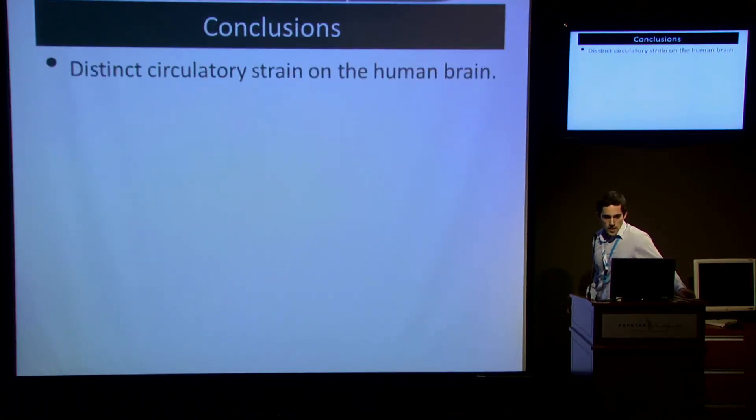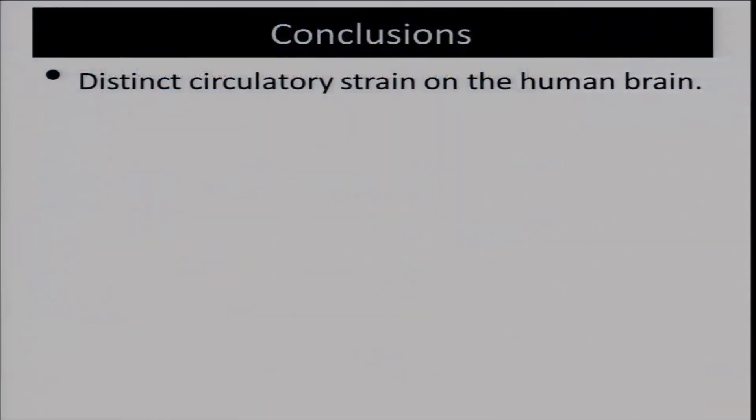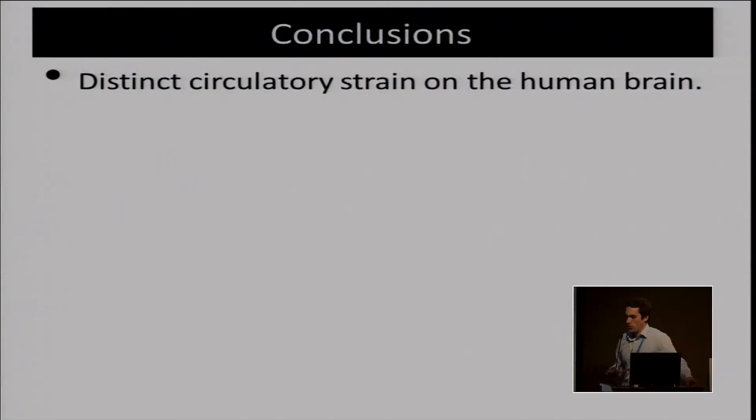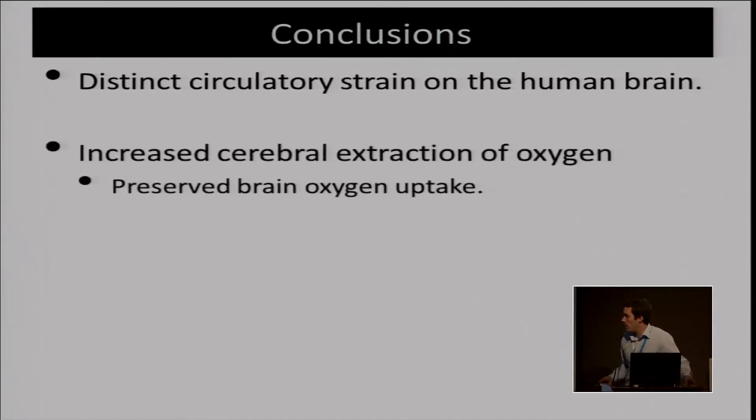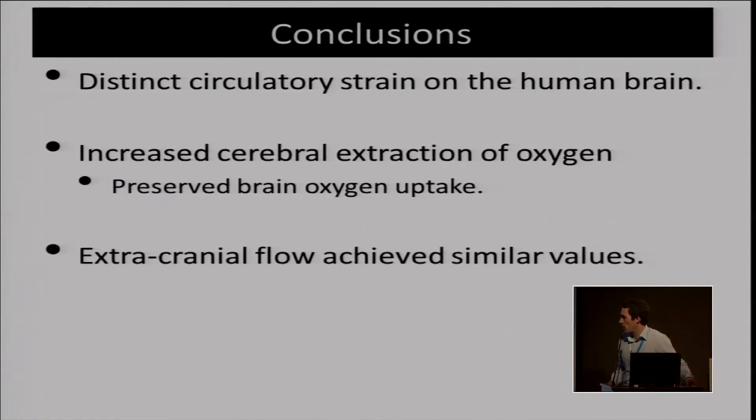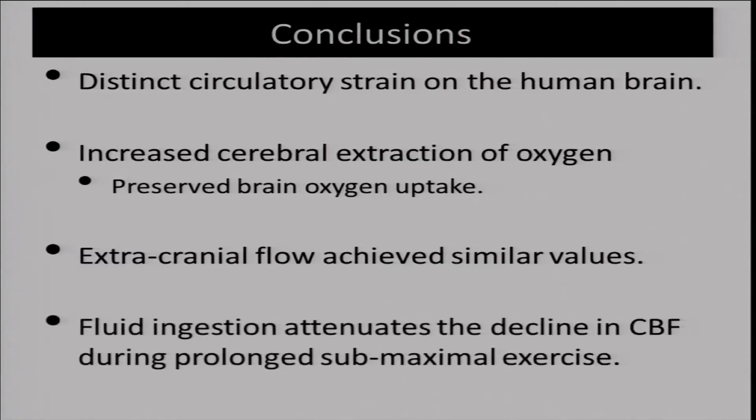In conclusion, there's a distinct circulatory strain on the human brain, and as Jose rightly said, it's not different compared to the rest of the body in terms of the leg and respiratory muscles. There seems to be this decline in flow that is common to the regions of the body. However, an increased cerebral oxygen extraction led to a preserved brain oxygen uptake throughout the two hours of exercise. Extracranial flow achieved a very similar value, so from that point of view it was similar between control and also conditions of dehydration. And fluid ingestion attenuated the decline in cerebral blood flow during prolonged submaximal exercise in the heat.